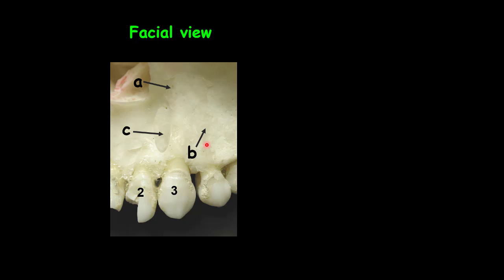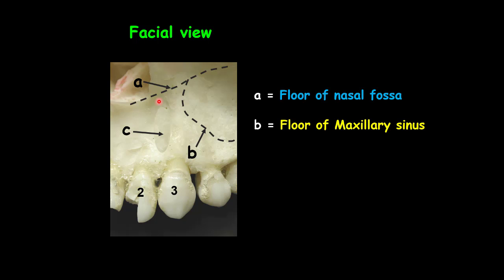The A dot line is showing the position of the floor of the nasal fossa. The B dot line is showing the position of the floor of the maxillary sinus. And C is showing the depression of the lateral fossa. So let's talk about each landmark.